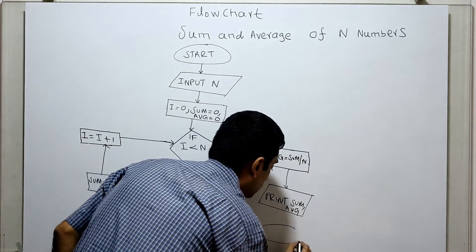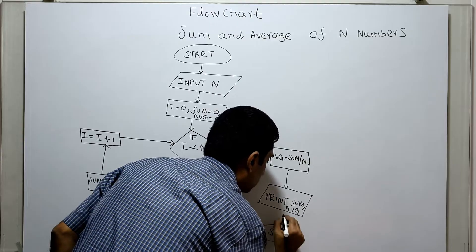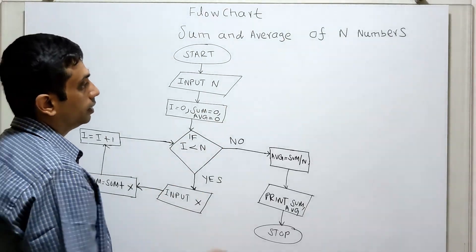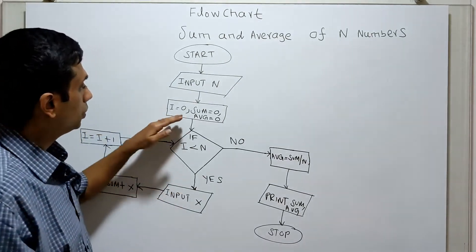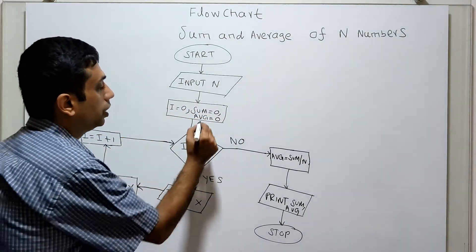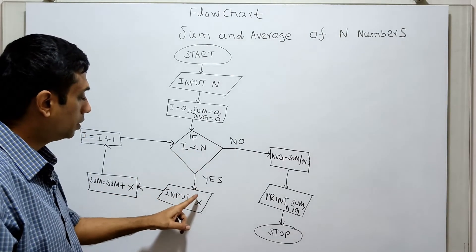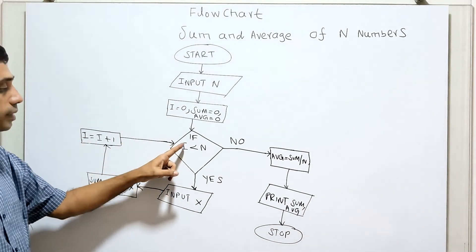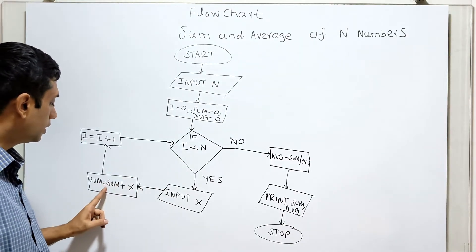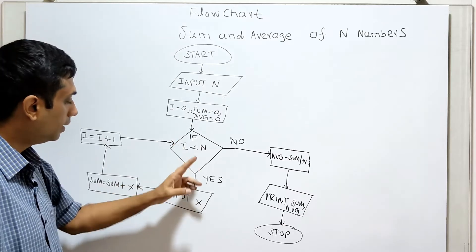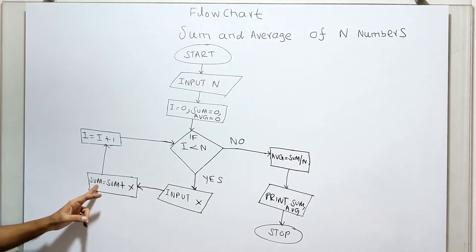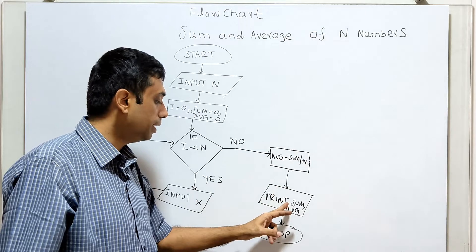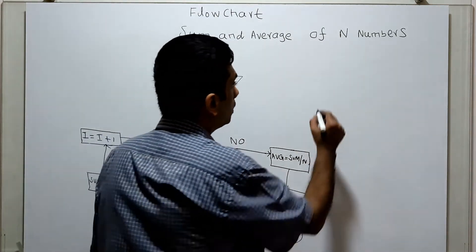So here I am obtaining the range, then initializing i equal to 0, sum equal to 0, average equal to 0. Until i less than n, I am continuously obtaining input, adding it to sum, and incrementing i. Once i less than n is false, I calculate average equal to sum divided by n, print the result, and this is the logical end of the flowchart.